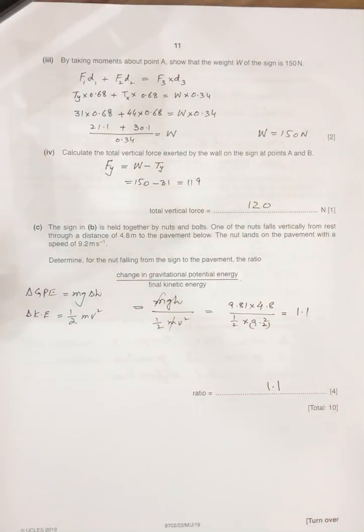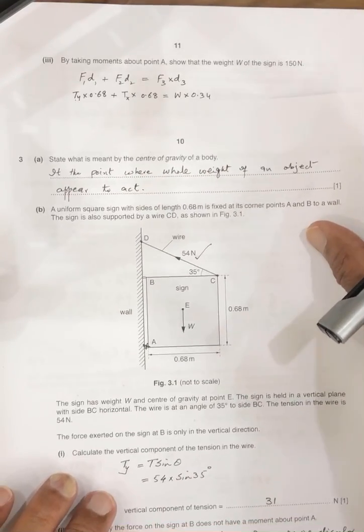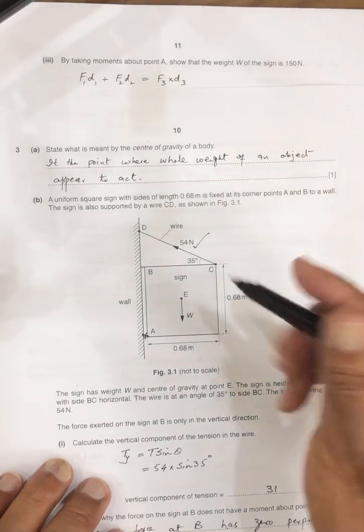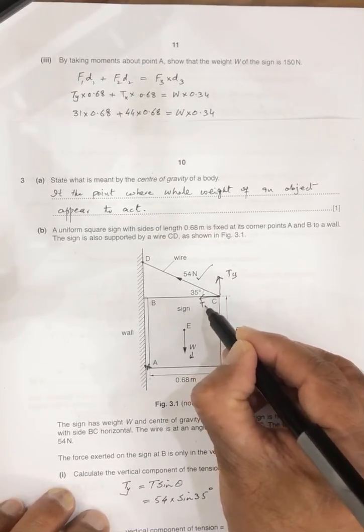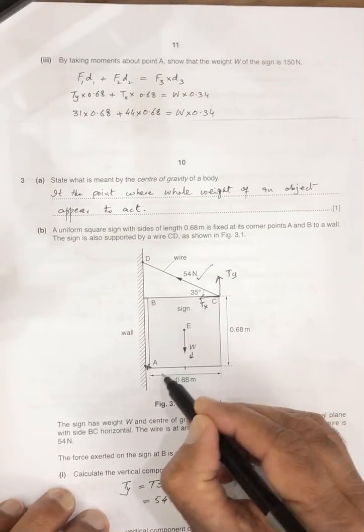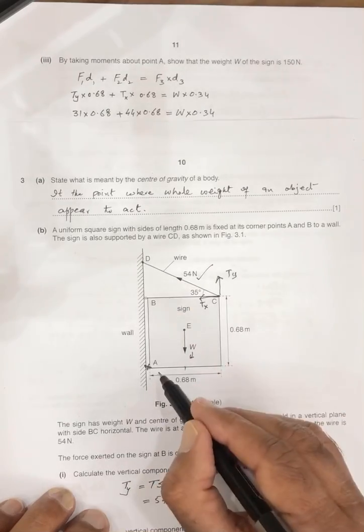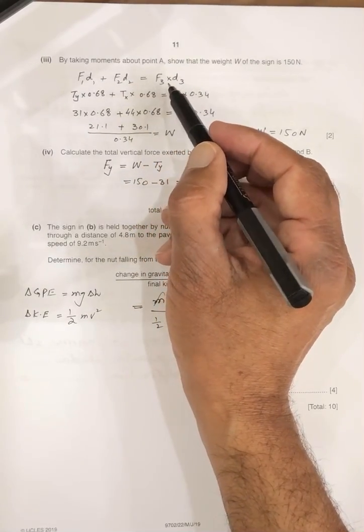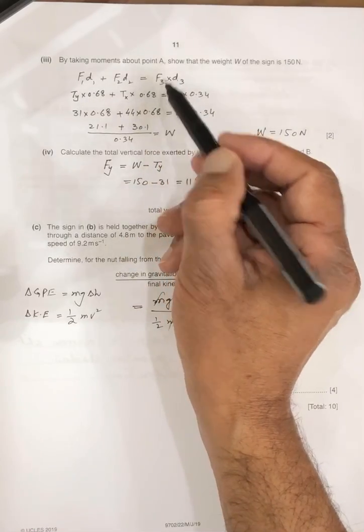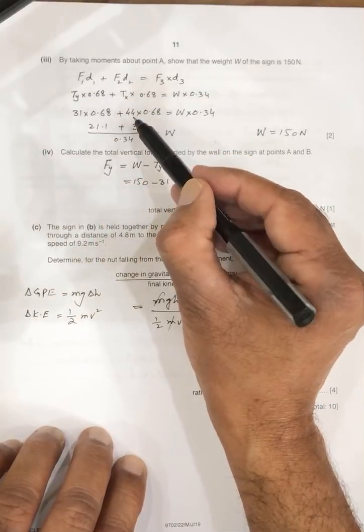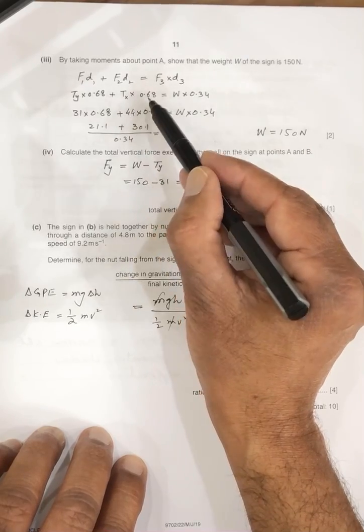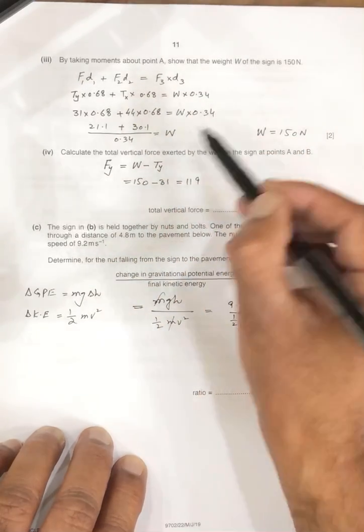Next question is by taking the moment about A, show that the weight of the sign is 150. Look at this. Three forces are acting. One is the weight, other is the y component of tension, and next is the x component of the tension. So weight has half, 0.68 distance from this, this Tx distance is 0.68, and Ty also has 0.68 distance. So we can write F1D1 plus F2D2, F3D3. So F1 is Ty, F2 is Tx, and F3 is W. So I'm putting their values, Ty is 31 into 0.68 plus Tx, T cos theta, calculate Tx 44.68, and weight multiply by 0.34, so weight becomes 150, so it is shown.